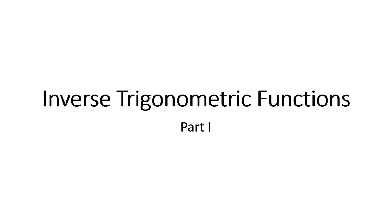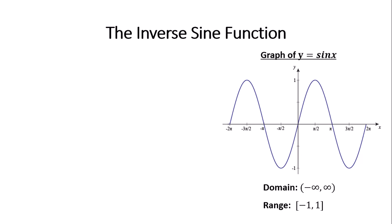This is a video about inverse trig functions, part 1. I like to start off by talking about the graph of y equals sine x. This is the graph of the sine function — two periods of the graph. It continues going on in the rightward direction forever and the left-hand direction forever. The domain of the sine function is negative infinity to infinity, and the range is negative 1 to 1.